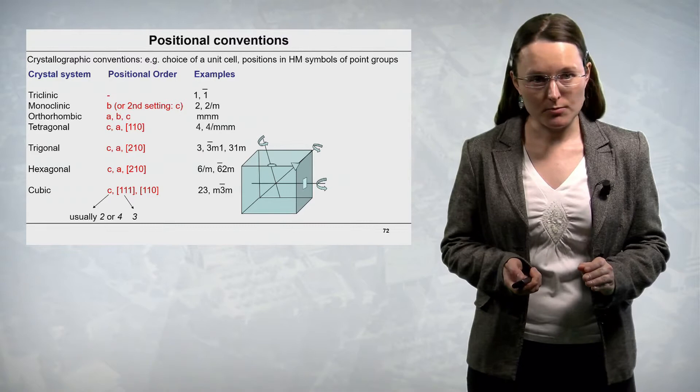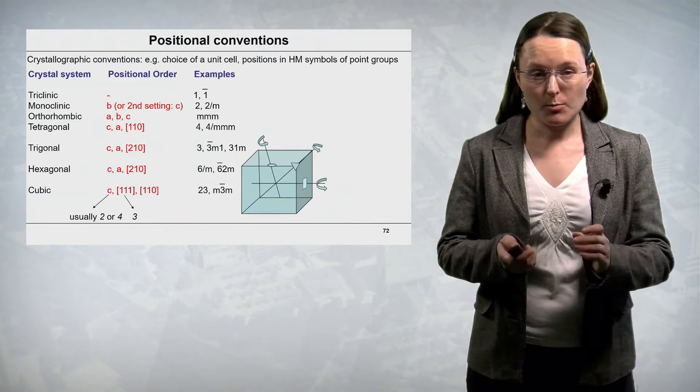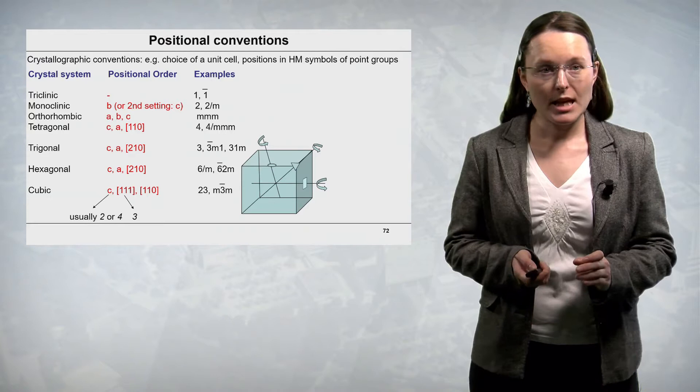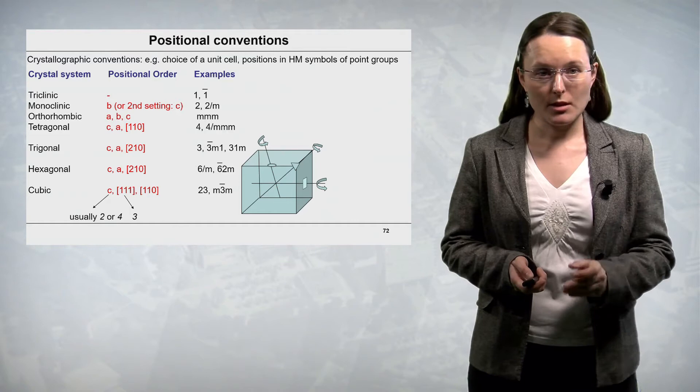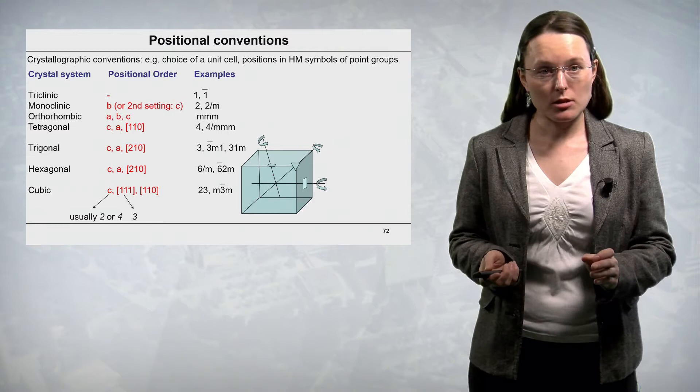In the trigonal crystal system, the first symbol corresponds to the special direction C, and the second symbol, if present, corresponds to the direction A. The third symbol corresponds to the crystallographic direction 2,1,0. In the hexagonal crystal system, we have the same convention: the first symbol is along the C cell constant, the second along the A cell constant, and the third along the crystallographic direction 2,1,0.